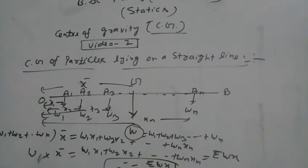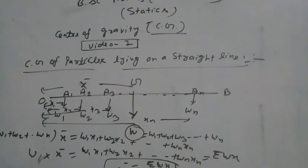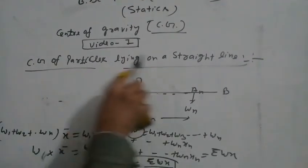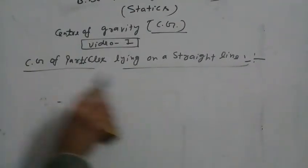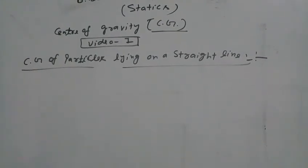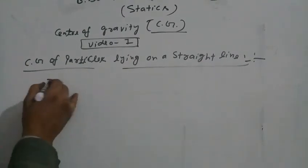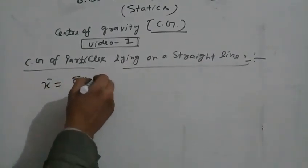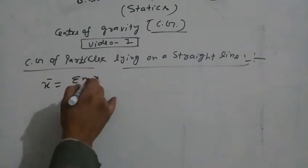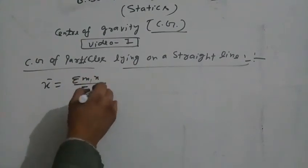If M1, M2, M3 are the masses of the particles instead of weights w1, w2, w3, then under these conditions, x bar equals summation Mx upon summation M.